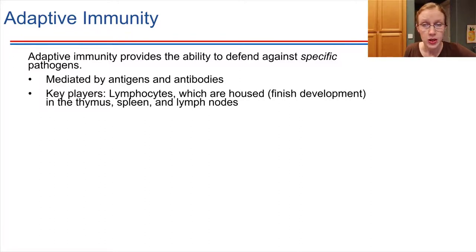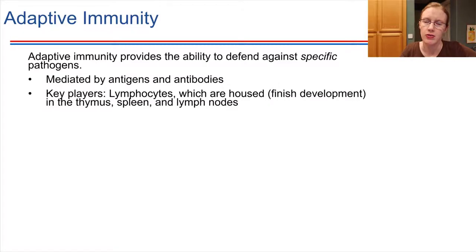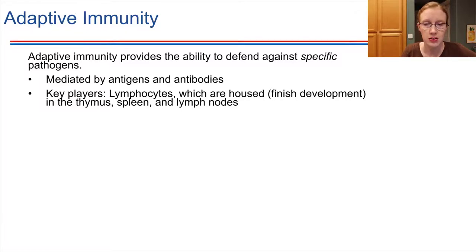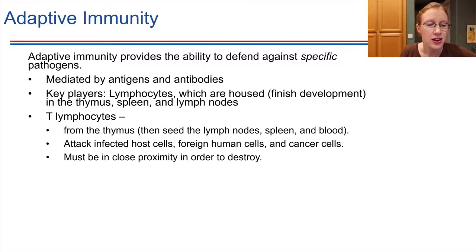In a normal healthy individual, there are two primary sets of lymphocytes that have major roles in adaptive immunity: T cells and B cells. T lymphocytes — their name, T, comes from the fact that they reside in the thymus.